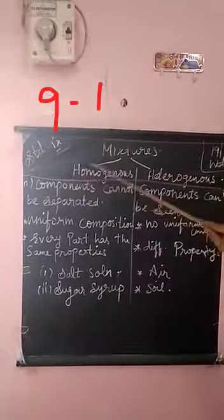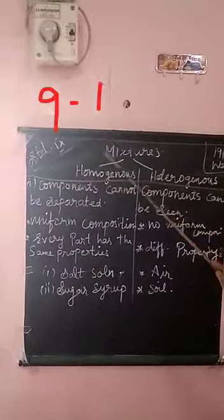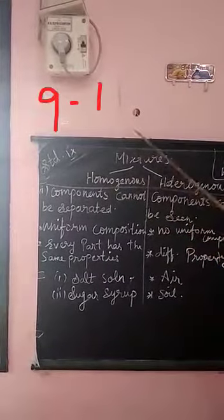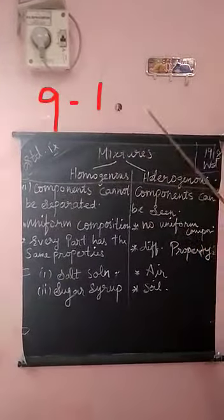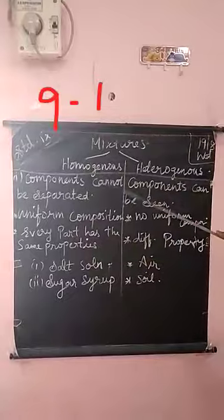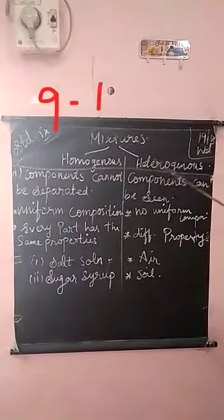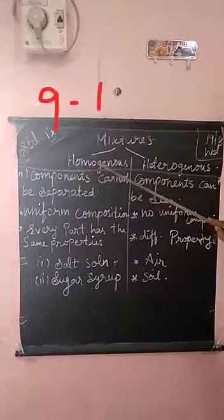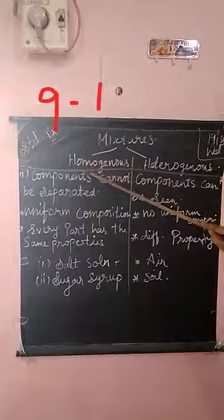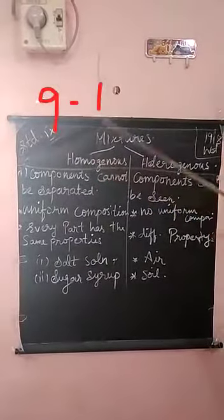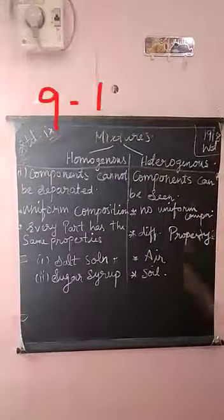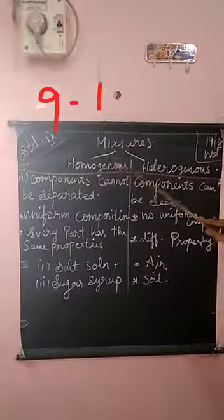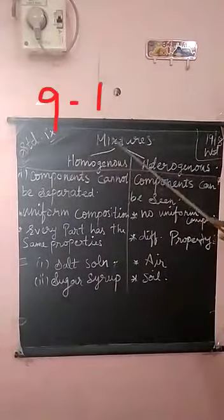Homo means one, so homogeneous mixture means it has to be seen as one — uniform composition. Hetero means more than one. For homogeneous mixture, you can imagine salt and water — a salt and water mixture.